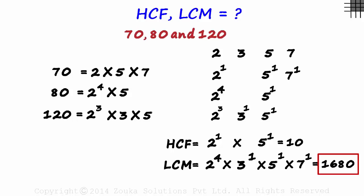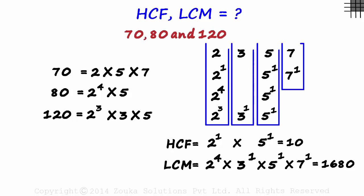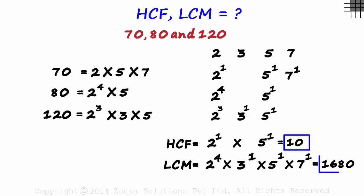That's the LCM of 70, 80 and 120. So we can see that with the simple column structure, we can easily find the HCF and LCM of three numbers. That's it.